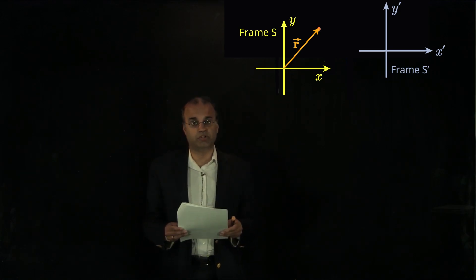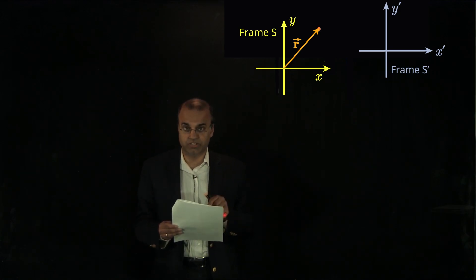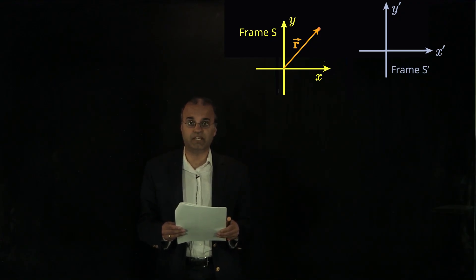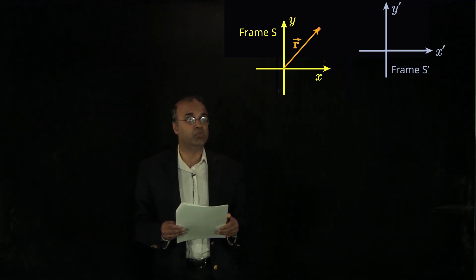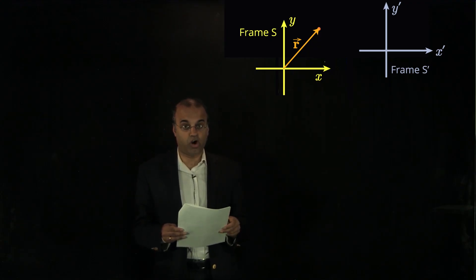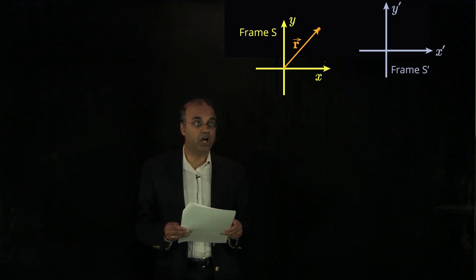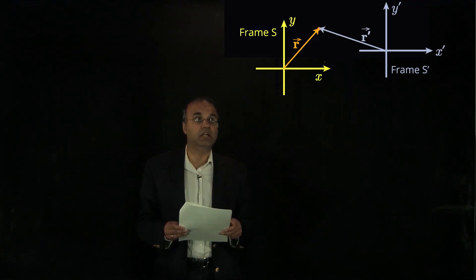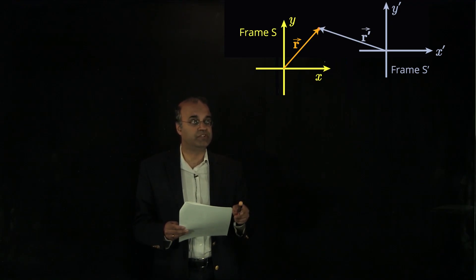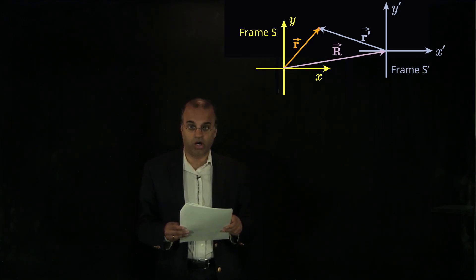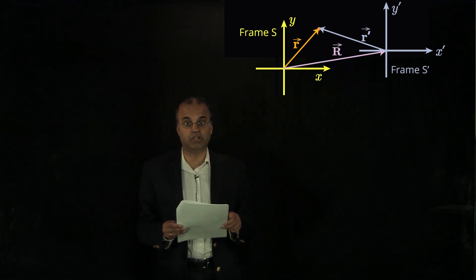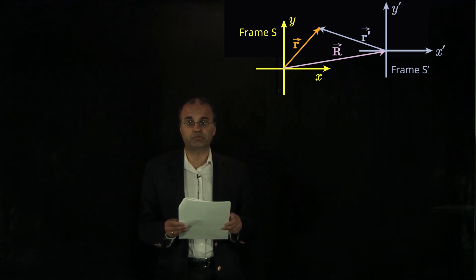Imagine we have two observers: one in frame S at the origin and one at the origin of frame S prime, both looking at the same object. Observer S will measure a position vector r. Observer S prime will measure a position vector r prime. The two observers have a relative position vector R, which is the position of S prime relative to the origin of frame S. We'd like to see how these different position vectors are related.